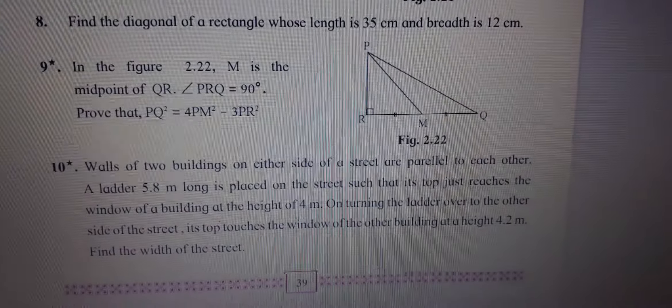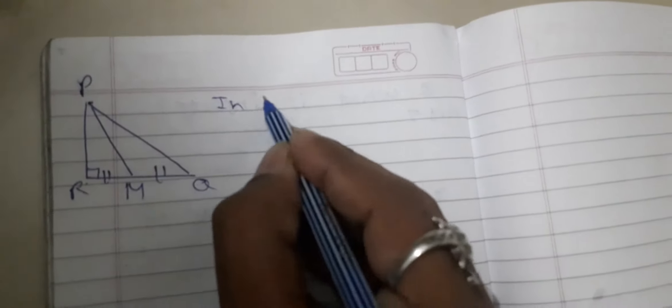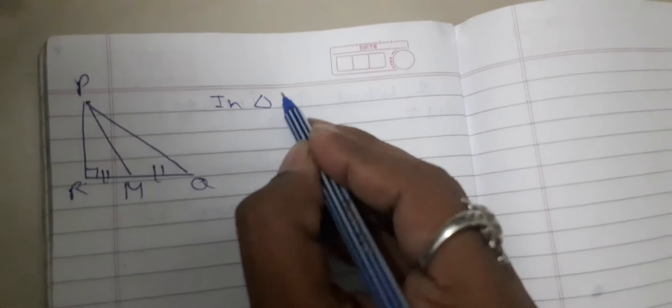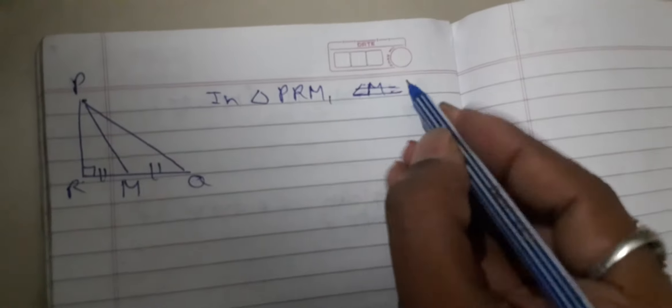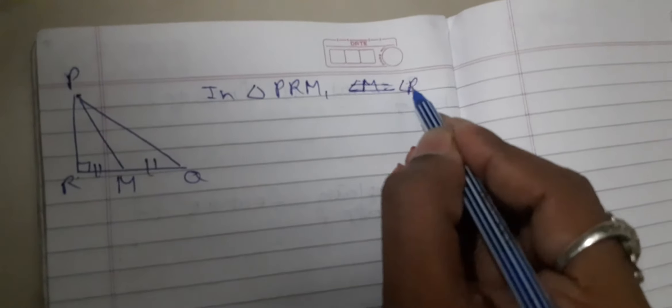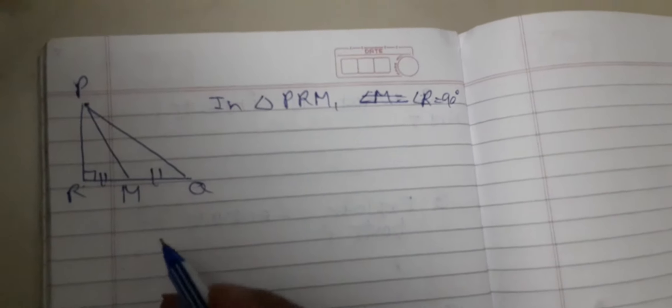Now, how to solve this question? Just look here. If we see this question, angle R is 90 degrees, so write in triangle PRM: angle R is equal to 90 degrees.